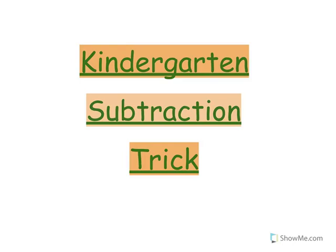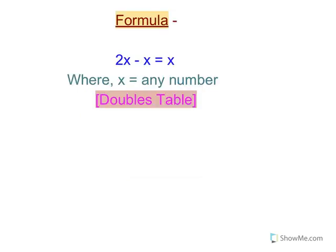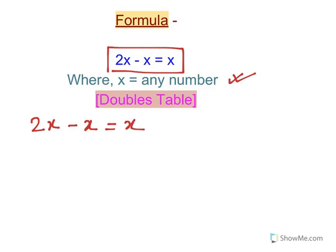Hi friends, today we will learn a small trick that will be useful for beginners to do subtraction. The formula is 2x minus x equals x, where x is any number. So double of any number, that is 2x, minus that number, that is x, equals to that number only, that is x.